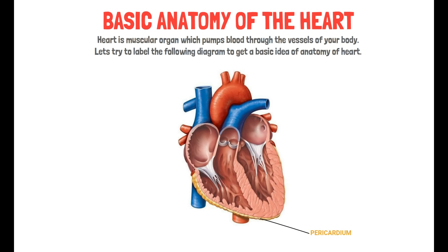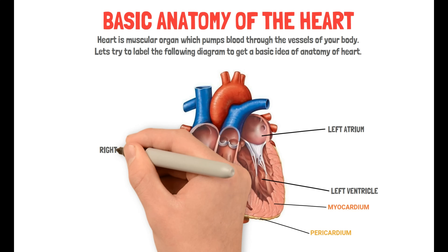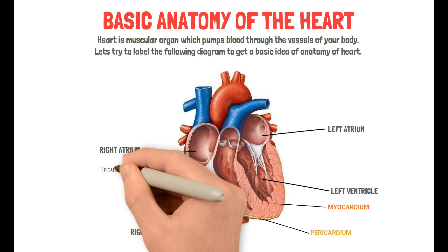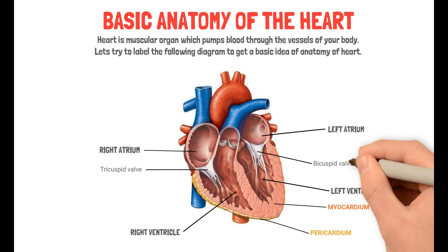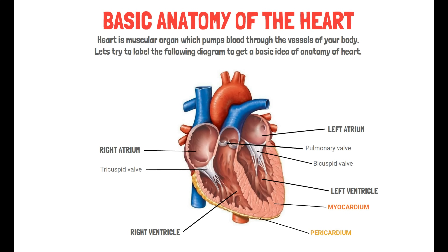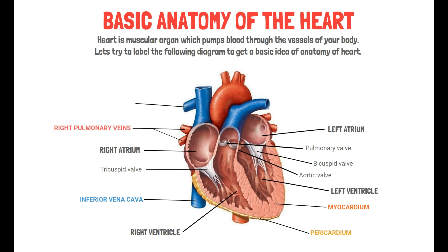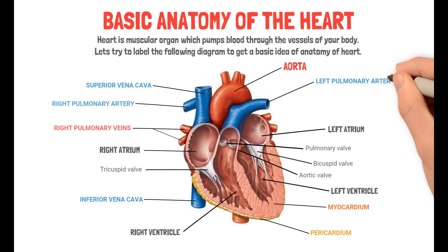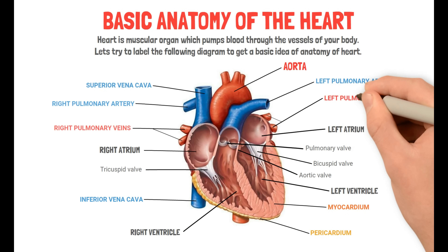This is the pericardium, the myocardium, the left atrium, the left ventricle, the right atrium, and the right ventricle. We have the valves: the tricuspid valve, the bicuspid valve, the pulmonary valve, and the aortic valve. We also have the inferior vena cava, the right pulmonary veins, the right pulmonary artery, the superior vena cava, the aorta, the left pulmonary arteries, and the left pulmonary veins.